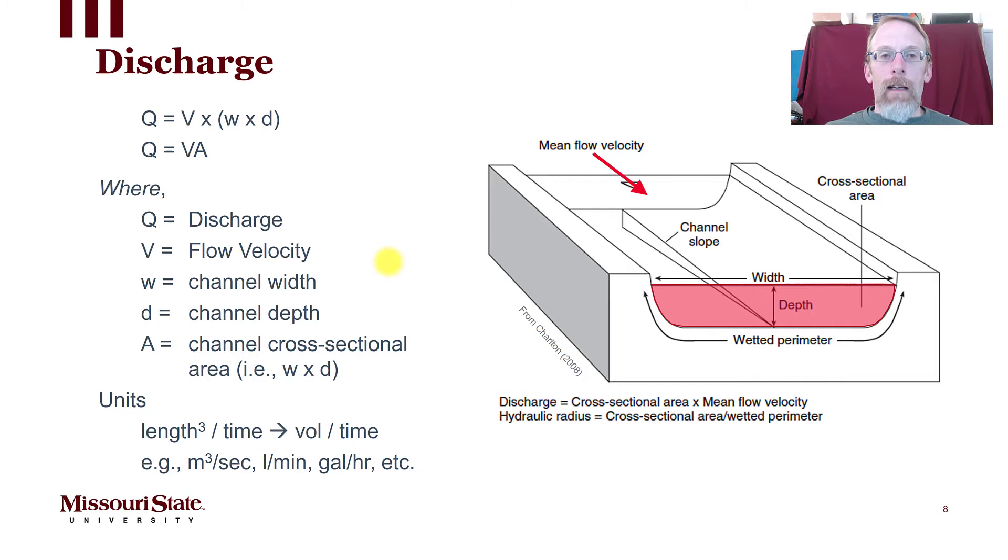Of course width times depth, if you think about the simplest channel shape which would be a rectangle, width times depth would be the cross-sectional area of the channel. So we can really simplify this equation to Q = VA, Q being discharge, V being velocity, A being area.